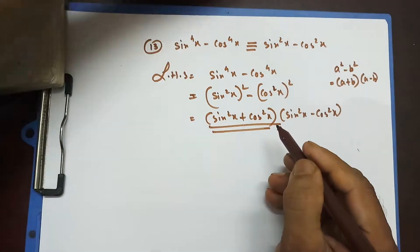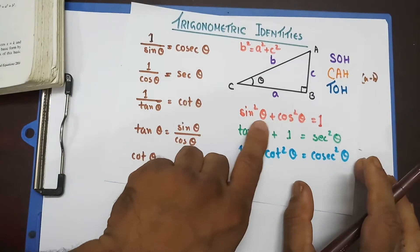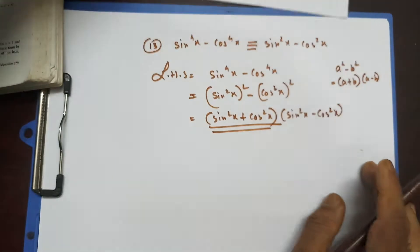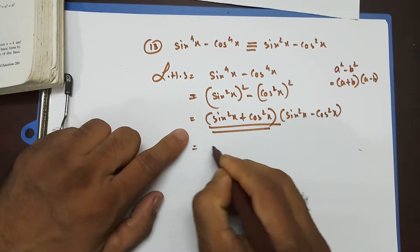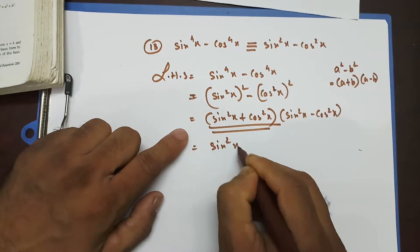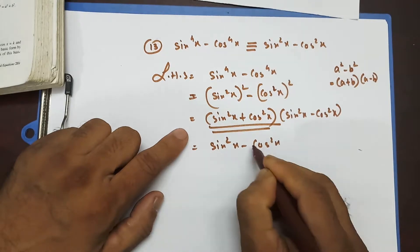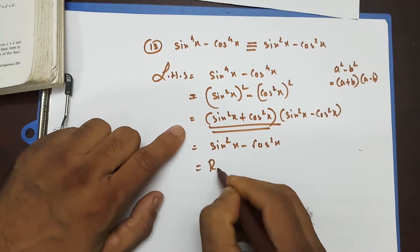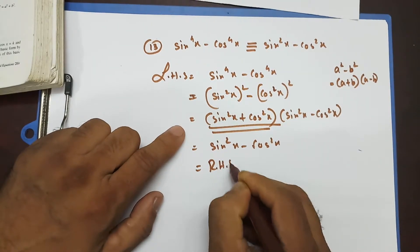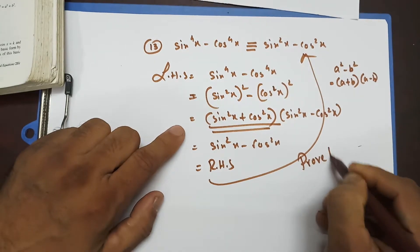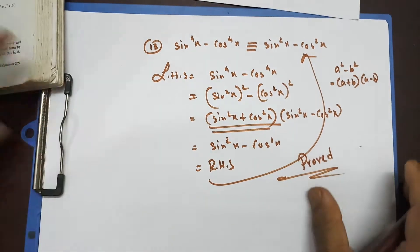Now this part — sin²x + cos²x — is the trigonometric identity equal to 1. If I replace that by 1, I end up with sin²x minus cos²x, which equals my right hand side. So that's proved. That was pretty easy!